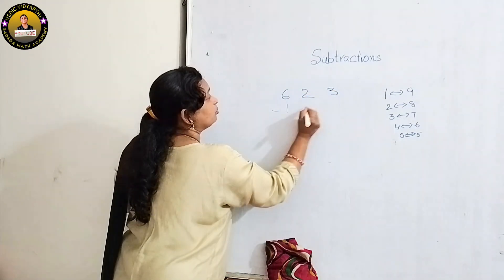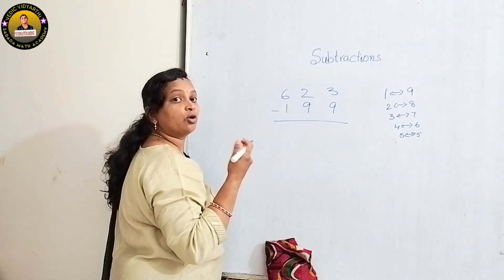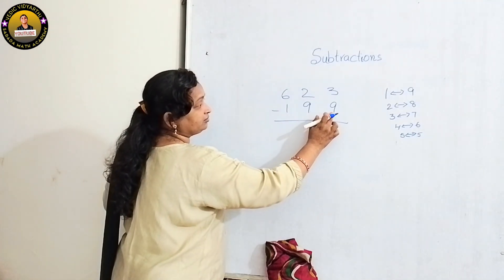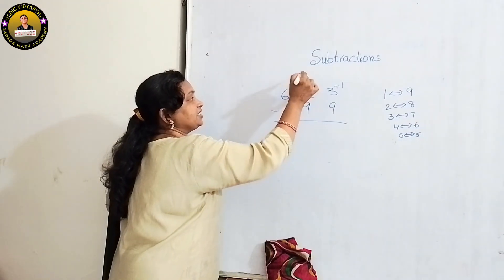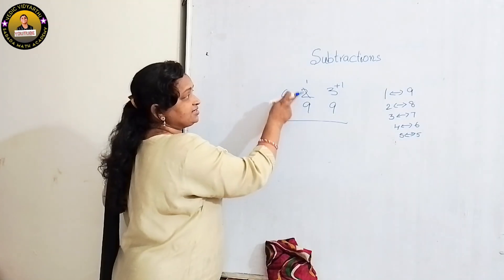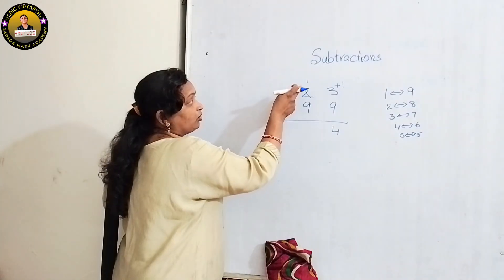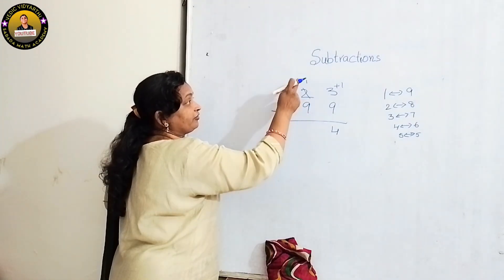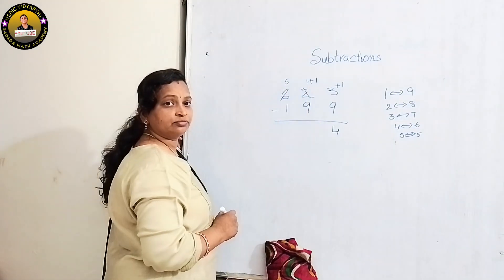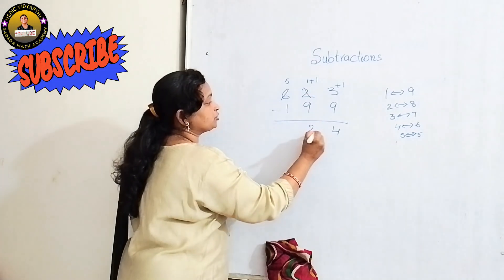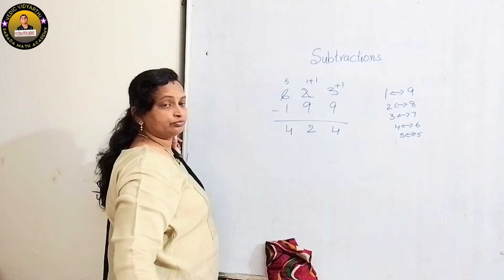623 minus 199. From 3 we can't subtract 9, so use the complement method. Complement of 9 is 1, so add 1 to 3. Then decrease 1 from the previous number — the 2 becomes 1. 3 plus 1 is 4. Now the tens place: we can't subtract 9 from 1 either, so complement of 9 is 1. 1 plus 1 is 2, then 5 minus 1 is 4. The final answer is 424.